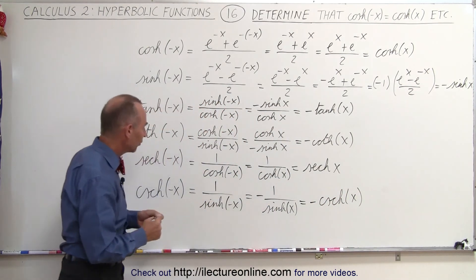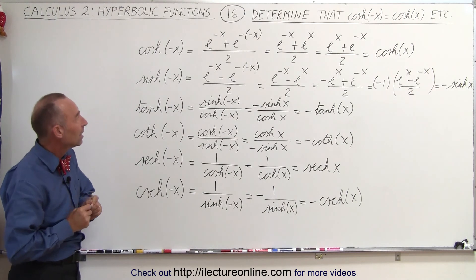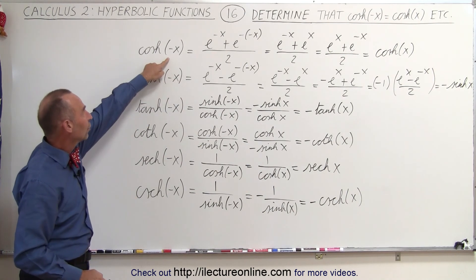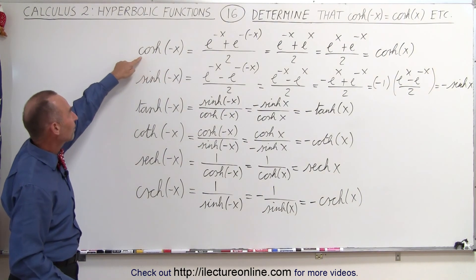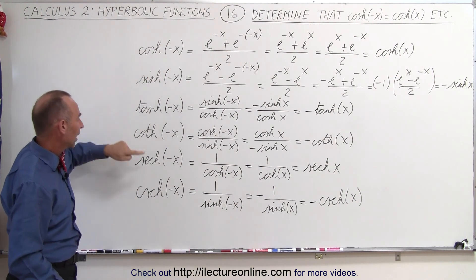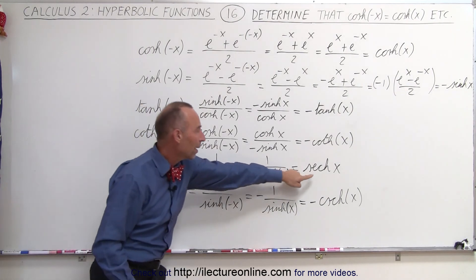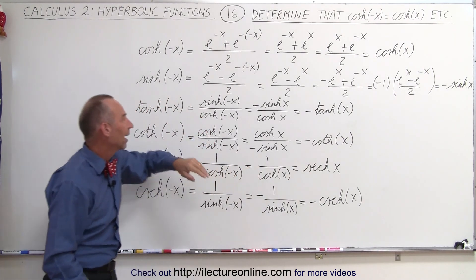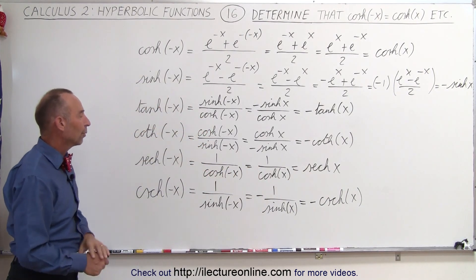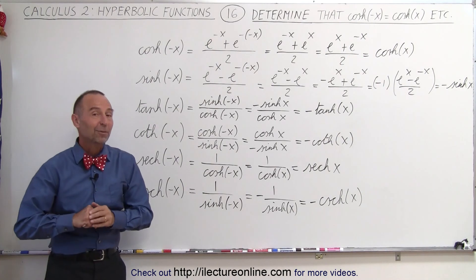And so those are the six hyperbolic identities. When we plug in a negative x, notice that whenever we have the hyperbolic cosine or the hyperbolic secant, it goes to the positive, and everything else we put a negative 1 in front of it. And that's how it's done.